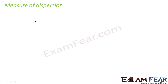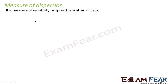What is measure of dispersion? It is the measure of variability or spread or scatter of data. It will tell you how scattered data is, how variable data is, what is the maximum value, what is the minimum value. Central tendency — mean, median, mode — was telling you what is the center point of data, which value has the maximum frequency.